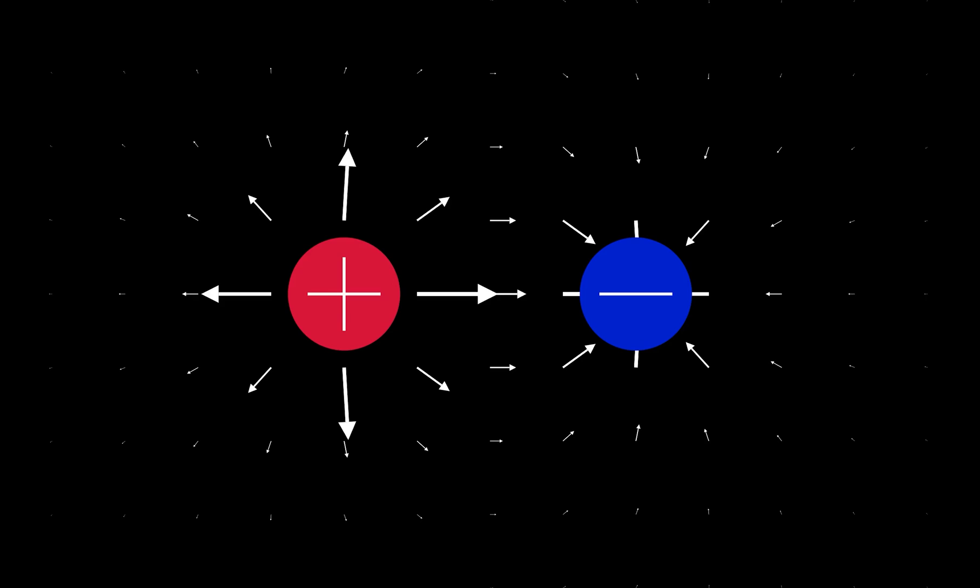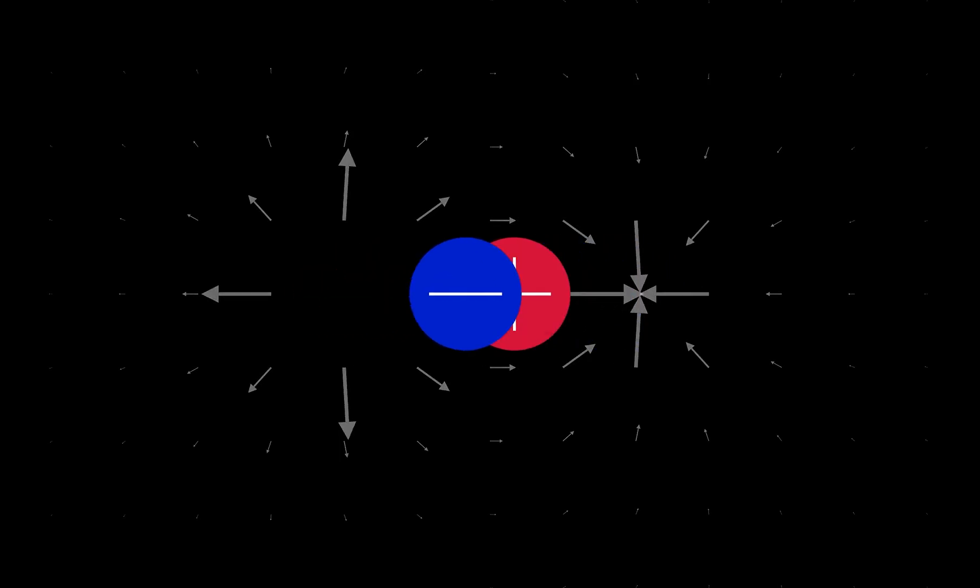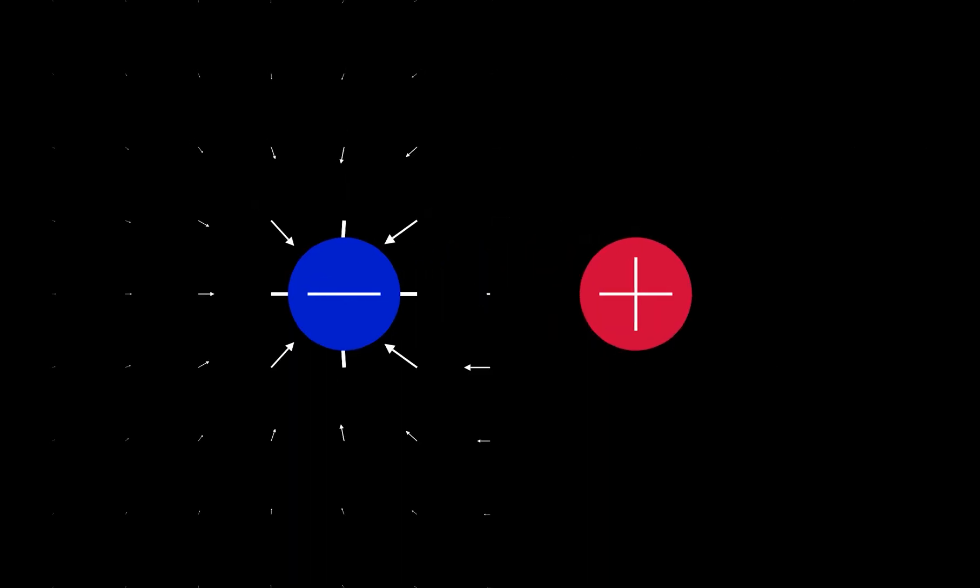Knowing both of these facts helps us to understand that an electric field vector tells us the size and direction of the force on a charge in that field. If the given charge was negative, the size of the field would be exactly the same, but the direction would be reversed.